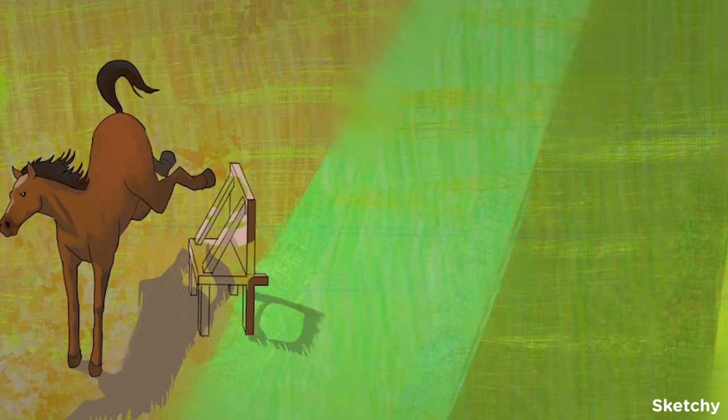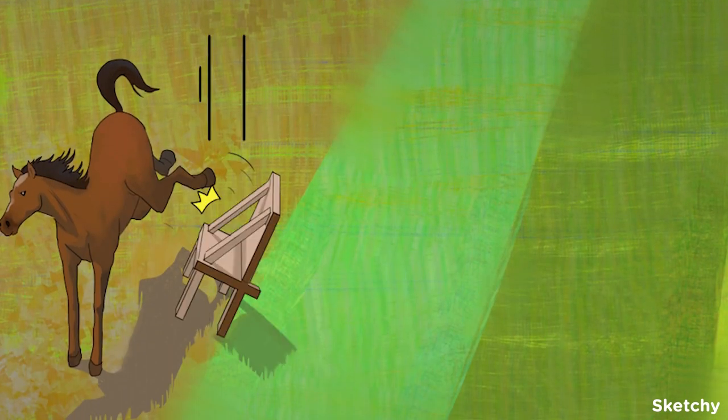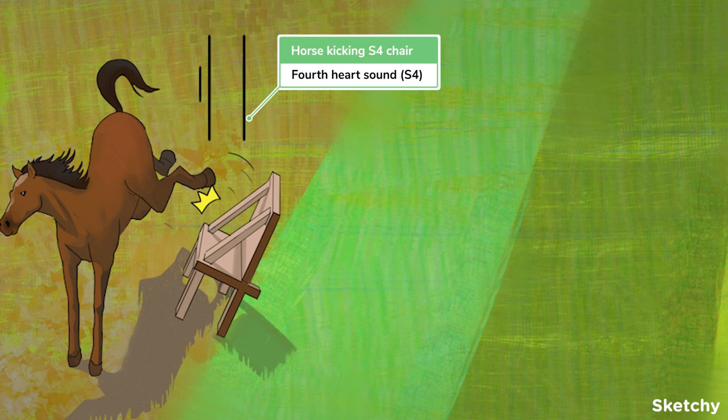During this phase, the fourth heart sound, S4, may also be heard. It is thought to be caused by vibrations produced from the atrium contracting and pushing blood into a stiff or non-compliant ventricle. S4 is sometimes called an atrial gallop, which is why it is depicted here by the heart sound-like lines generated from this intern, I mean horse, kicking over a super stiff S4 chair.